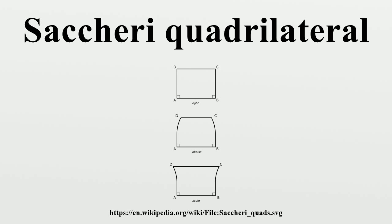Saccheri himself, however, thought that both the obtuse and acute cases could be shown to be contradictory. He did show that the obtuse case was contradictory, but failed to properly handle the acute case. Saccheri quadrilaterals were first considered by Omar Khayyam in the late 11th century in Book 1 of Explanations of the Difficulties in the Postulates of Euclid.